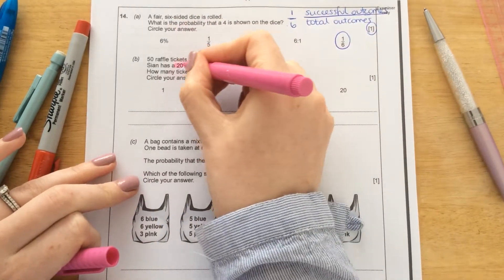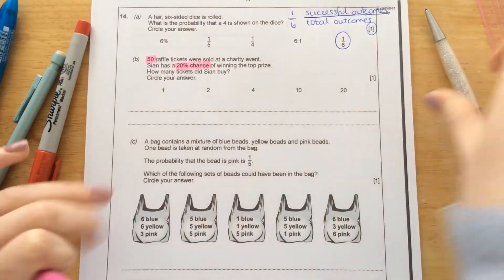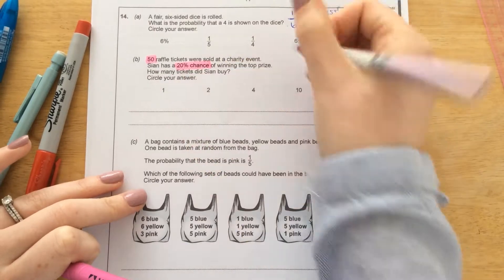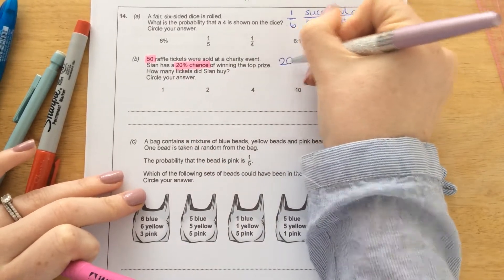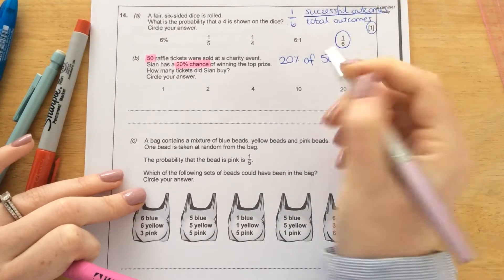So if she has a 20% chance, then that means she has 20% of the total amount of tickets. So 20% of 50.